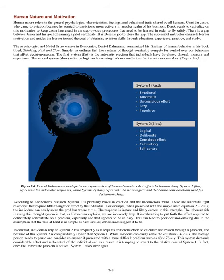Human Nature and Motivation: Human nature refers to the general psychological characteristics, feelings, and behavioral traits shared by all humans. Consider Jason, who came to aviation because he wanted to participate more actively in his business. Derek needs to capitalize on this motivation to keep Jason interested in the step-by-step procedures needed to fly safely. The successful instructor channels learner motivation and guides the learner toward the goal of obtaining aviation skills. The psychologist and Nobel Prize winner Daniel Kahneman summarized his findings in his book 'Thinking, Fast and Slow,' outlining that two systems of thought constantly compete for control over our behaviors. System 1 (fast) is the automatic reaction developed through memory and experience. System 2 (slow) relies on logic and reasoning to draw conclusions.